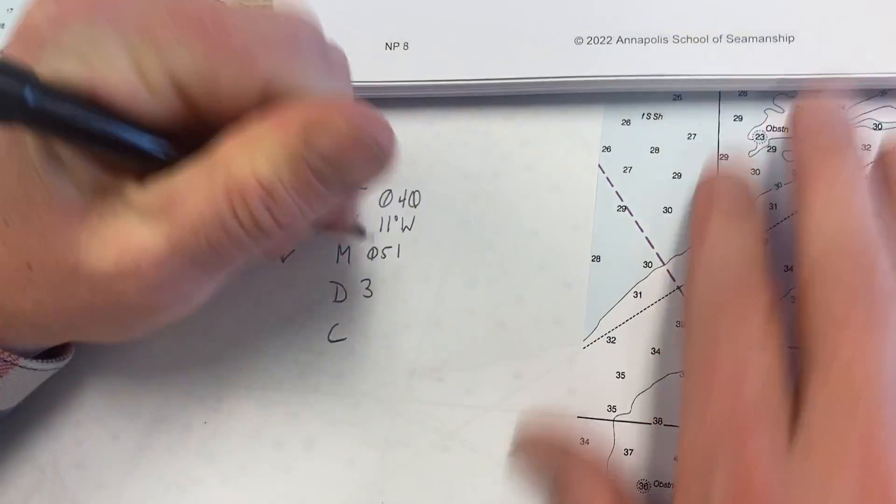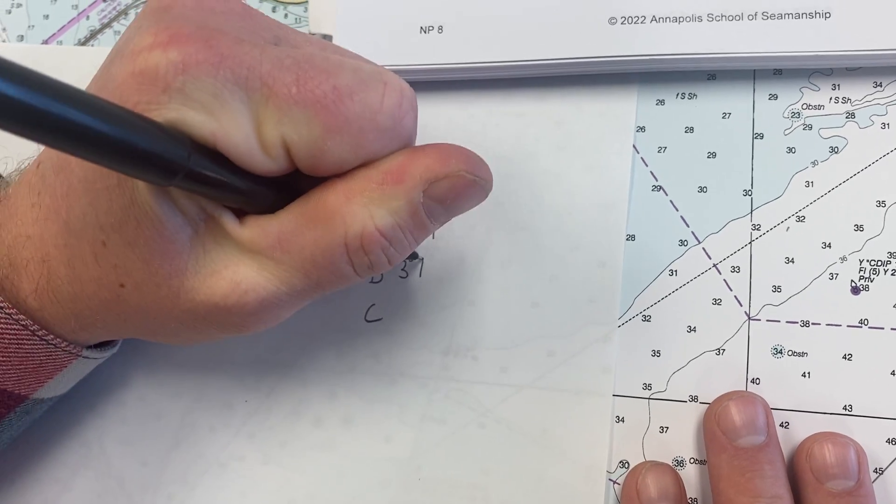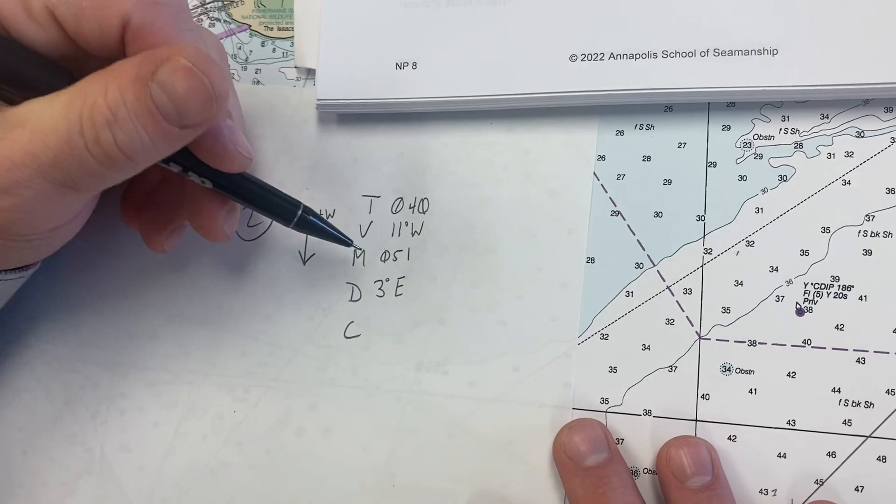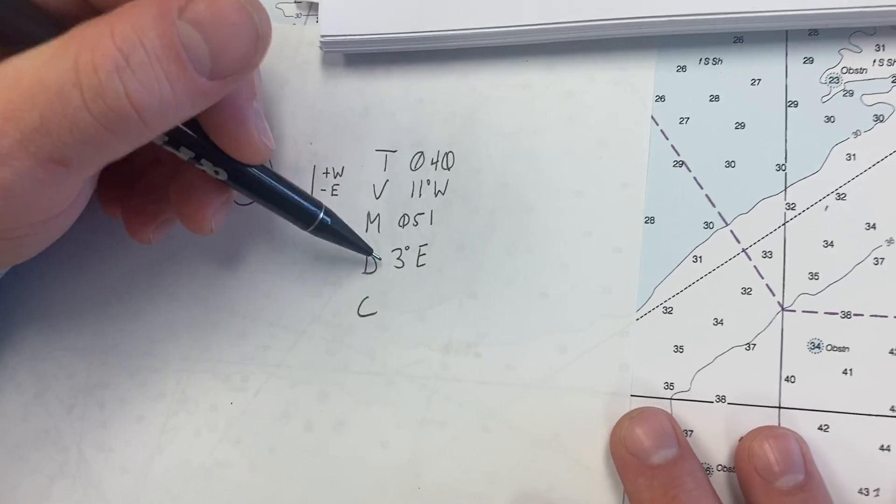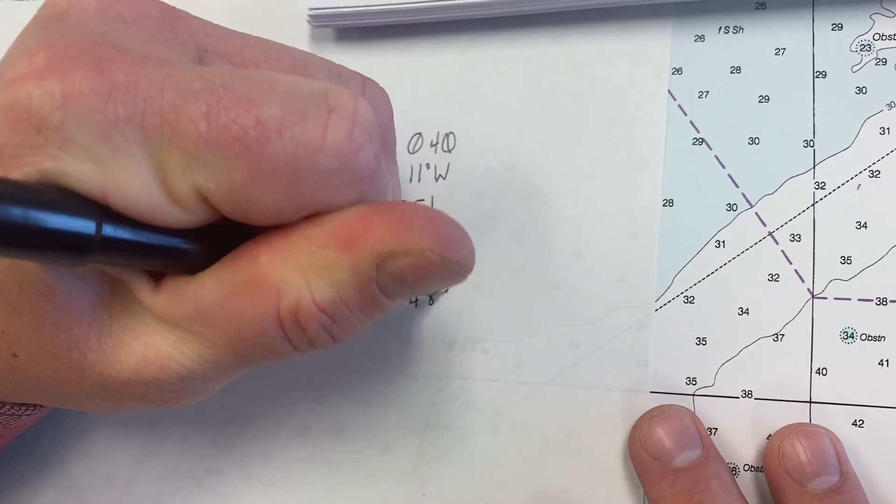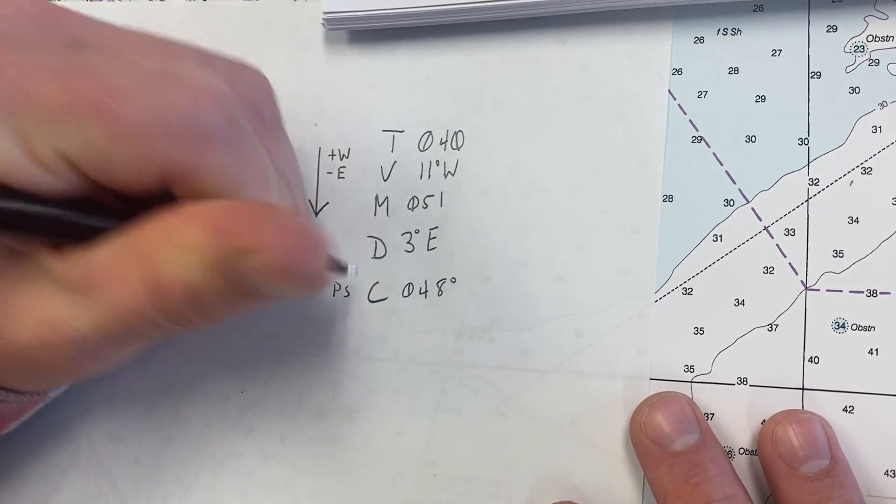So I'm going to write in 3 degrees east. Get into the habit of writing that E in there so we make sure we subtract in this case. So 0, 5, 1 minus 3 gives us a 0, 4, 8 degrees for our PSC here.